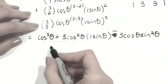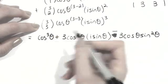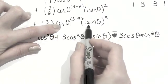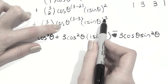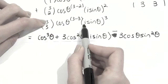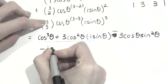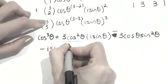And then our last term is 3 choose 3, which is just 1, times cos theta to the power of 0, so that's just 1, times i sine theta to the power of 3. So i cubed is equal to negative i, so we have minus i sine cubed theta.